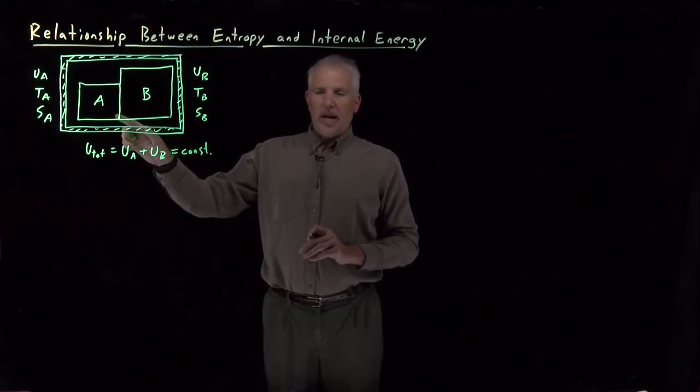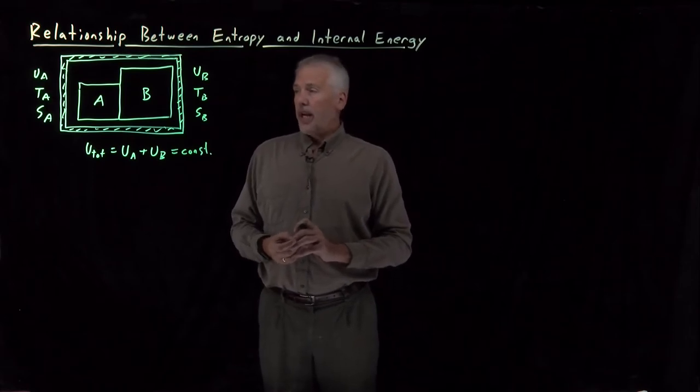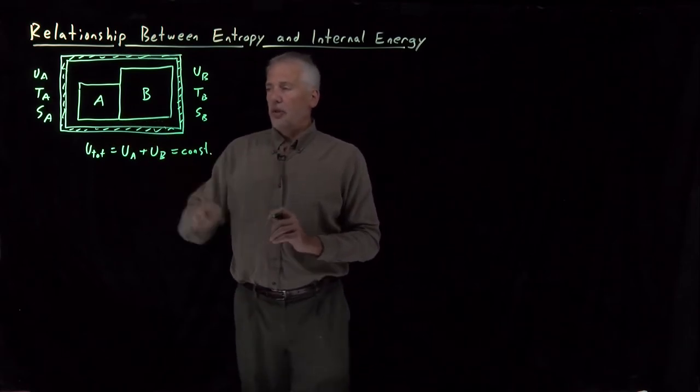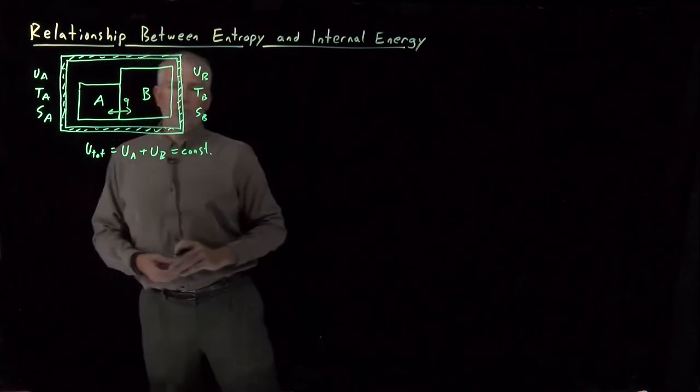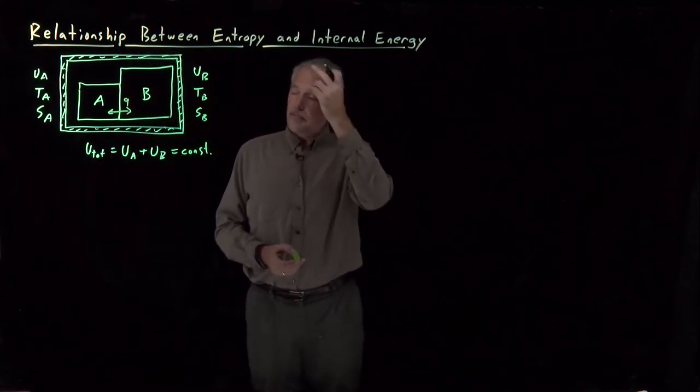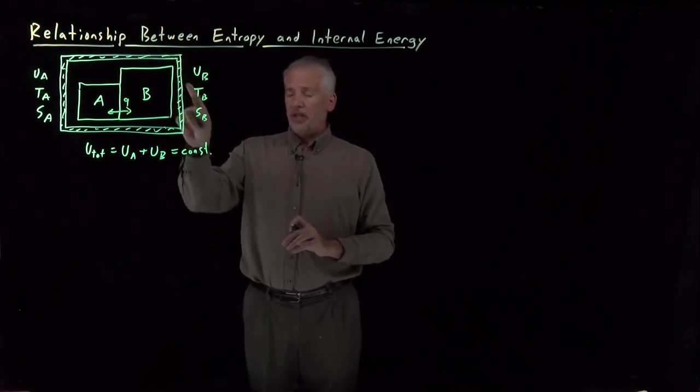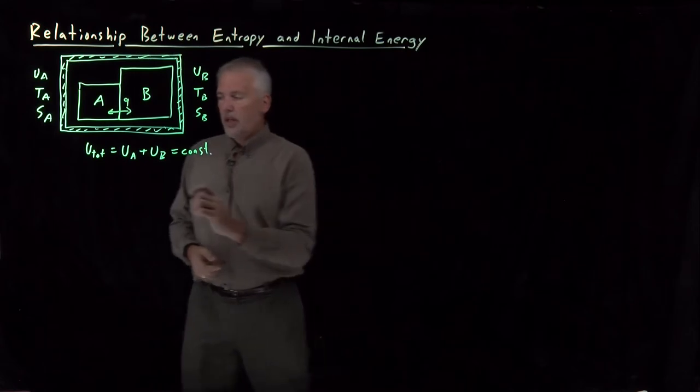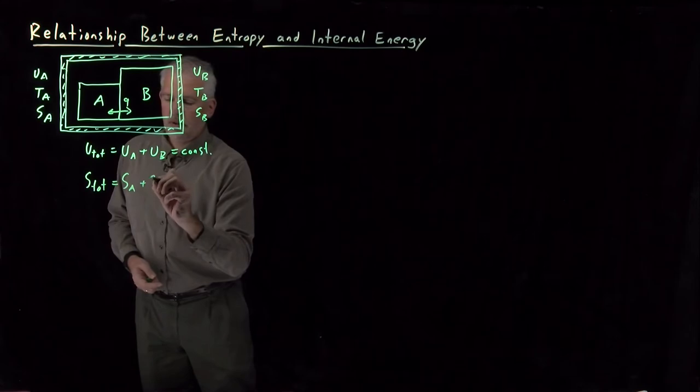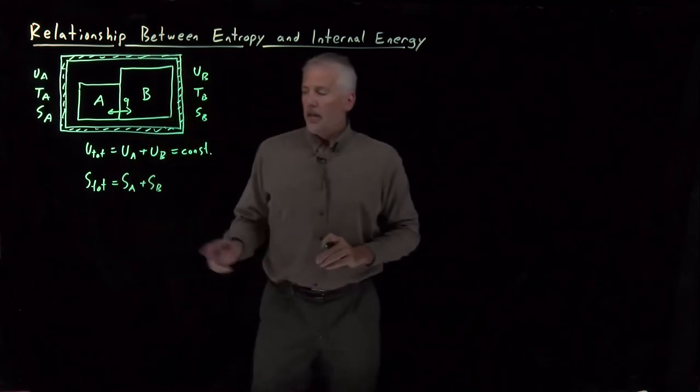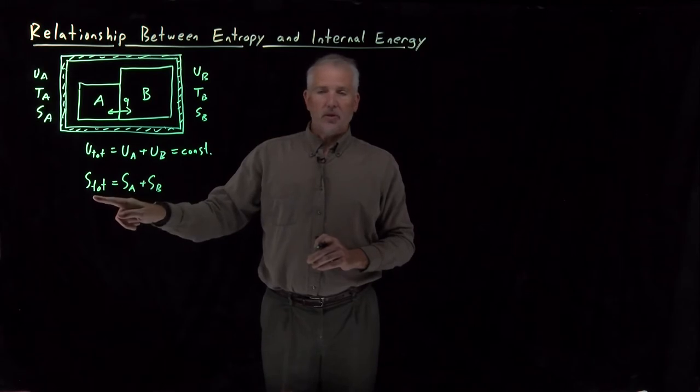So in order to predict what's going to happen, if we think about it from a microscopic point of view anyway, what's going to happen is as energy flows from one to the other, so there might be some heat transferred from one of these systems to the other, that's going to change the temperatures, change the energies, change the entropies, but we know what